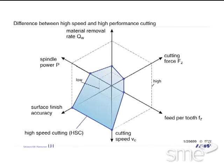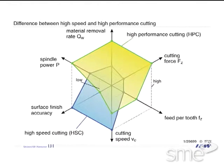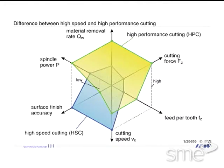Compared to that, high-performance cutting means cutting with only medium cutting speed to get the maximum spindle power or spindle torque, and applying medium or high feed rates in order to get the maximum material removal, especially for the roughing operation.